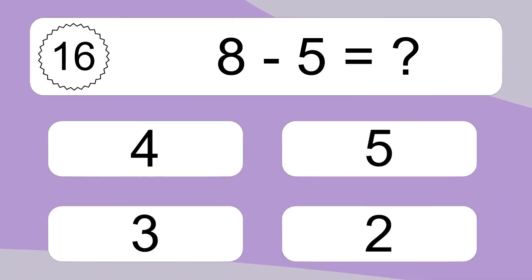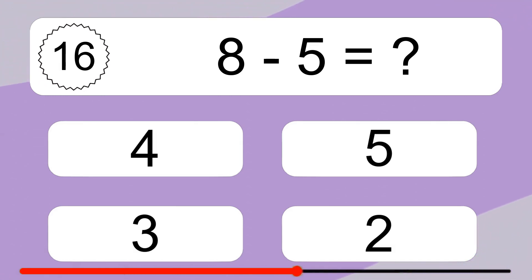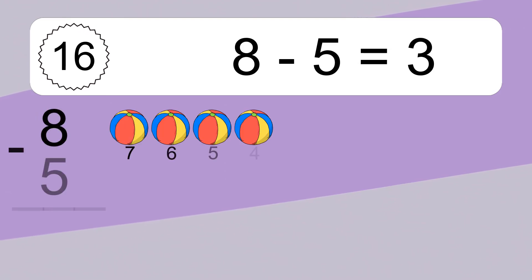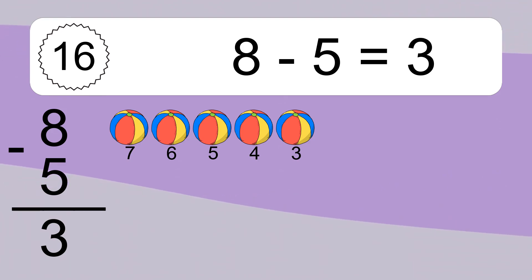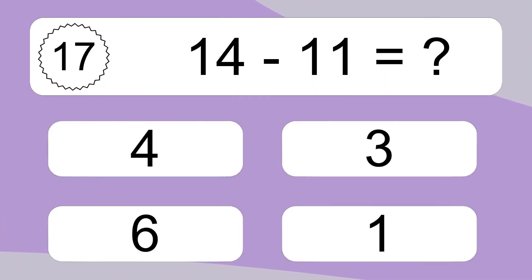8 minus 5 equals what? 8 minus 5 equals 3. Let's count it. 7, 6, 5, 4, 3.